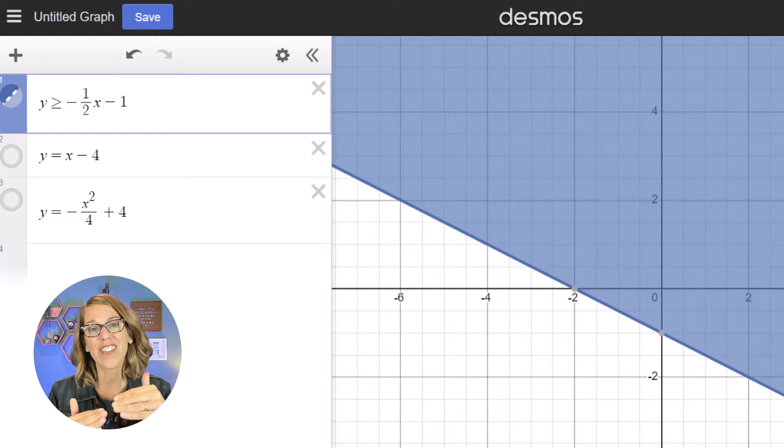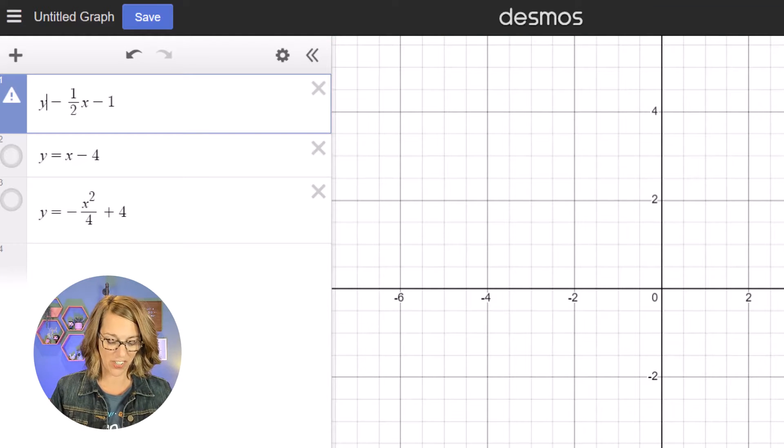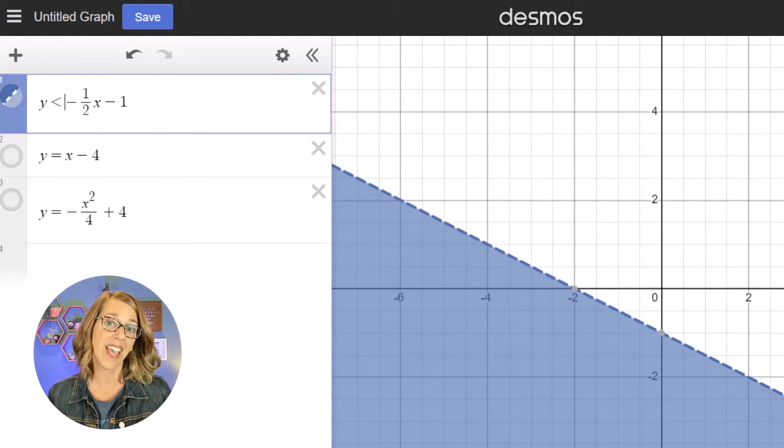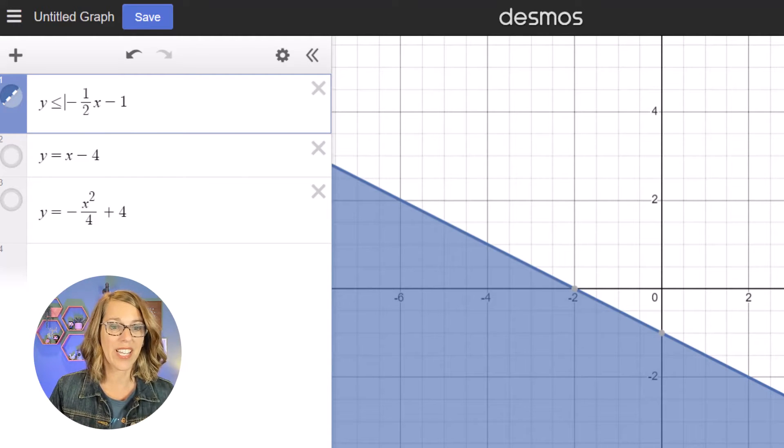So now I've got on the line which is solid or above. I can change this to shade of course below that line by changing that inequality to a less than, or I can do a less than or equal to.